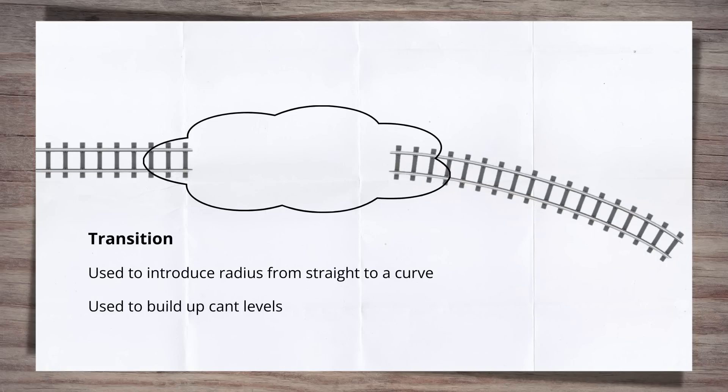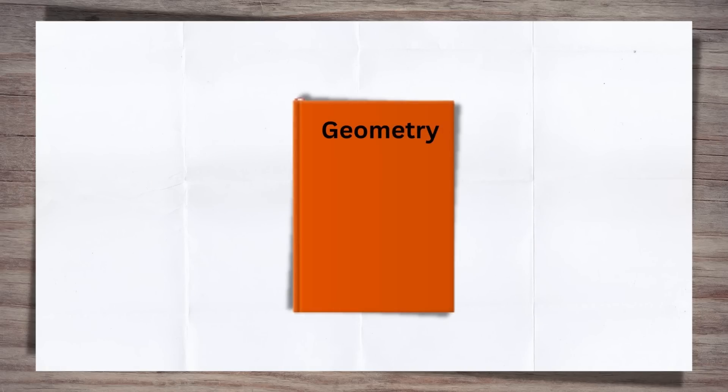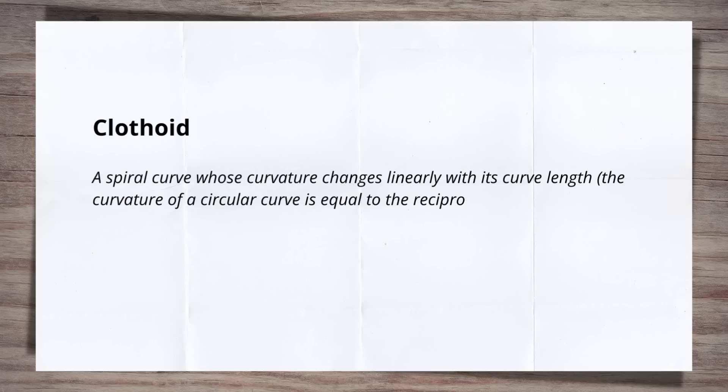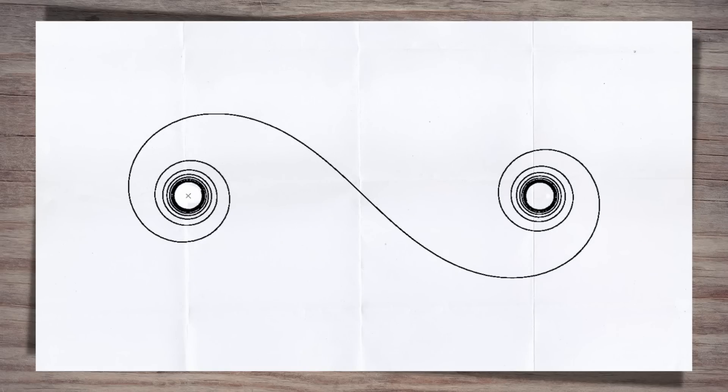But how's this done? Let's put on our geometry hats. A transition curve is in fact what is known as a clothoid, which is a type of spiral. A clothoid spiral tightens uniformly along the length, meaning there is a proportional link between the radius and its length. This continual variation of curvature ensures a smooth transition for the trains.